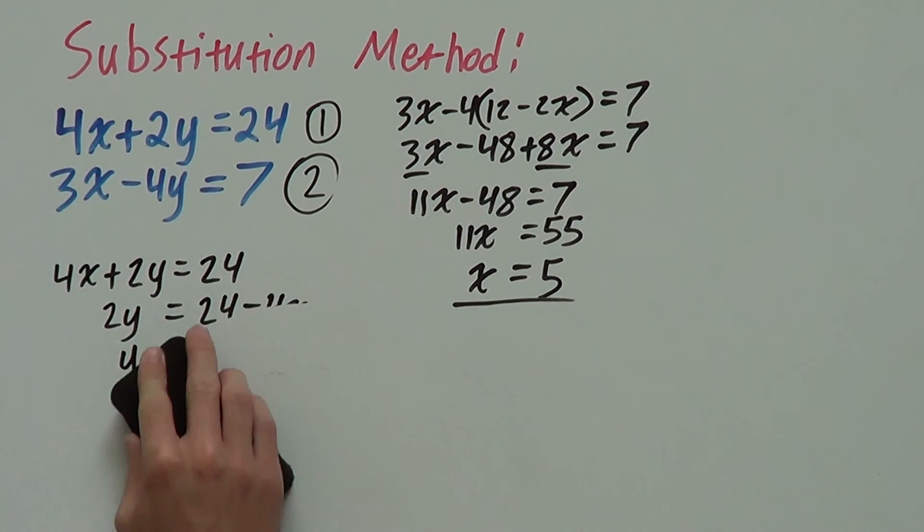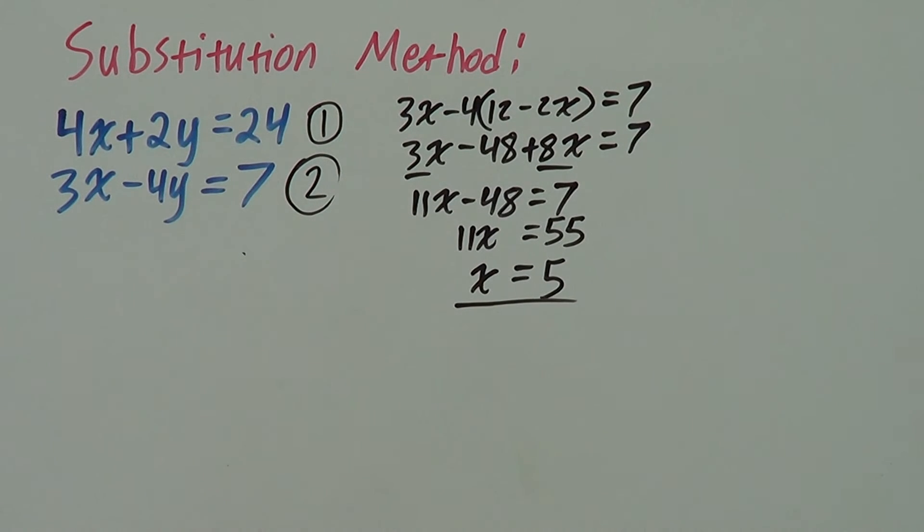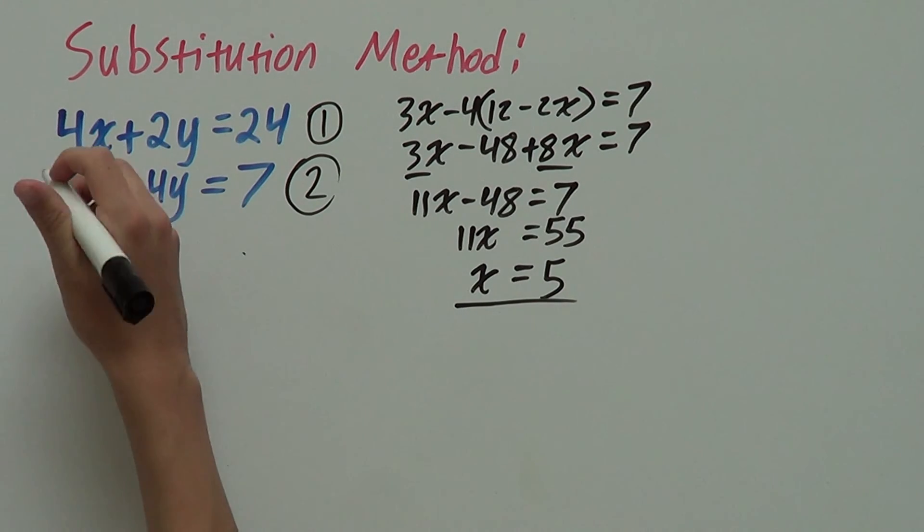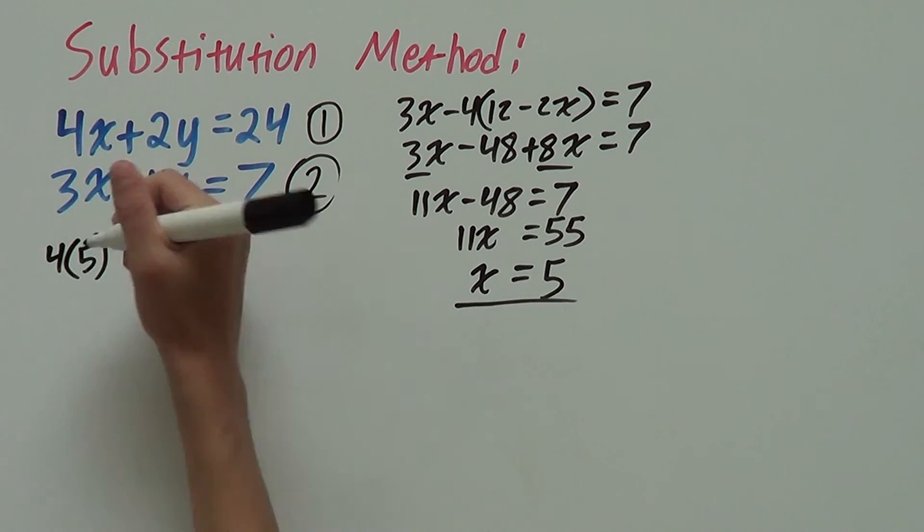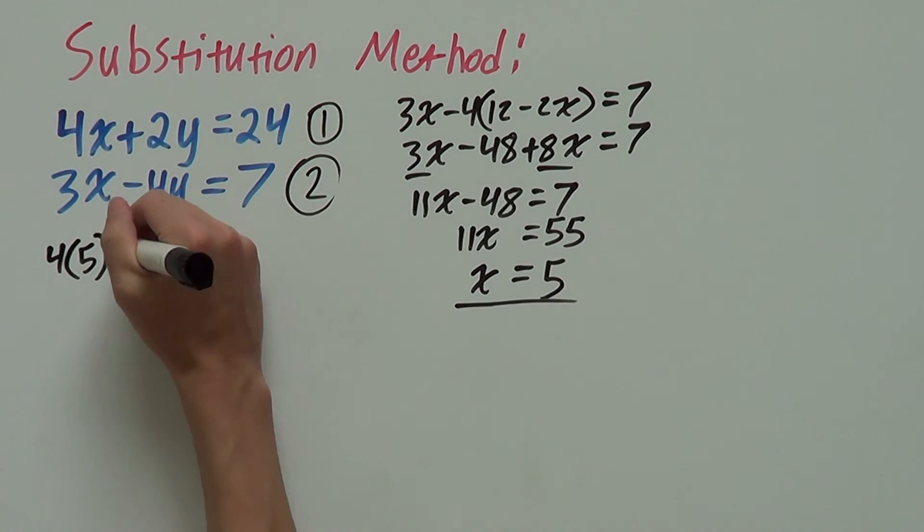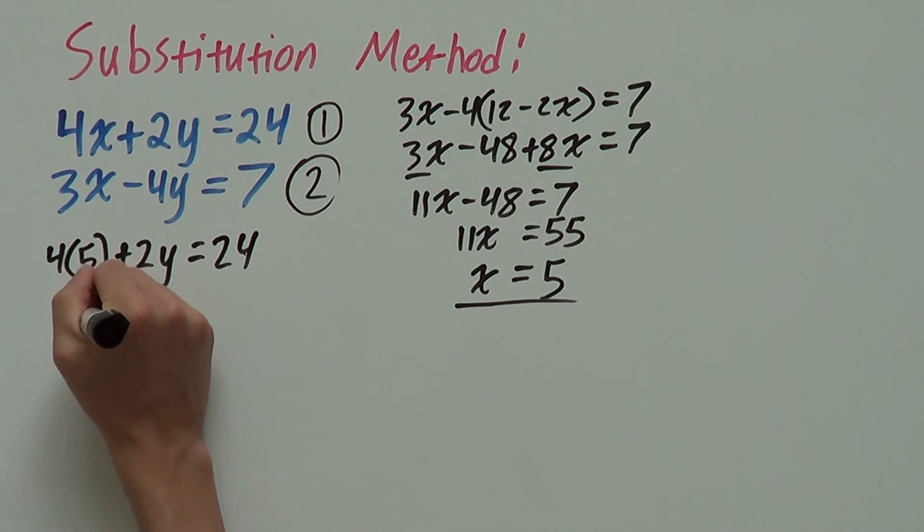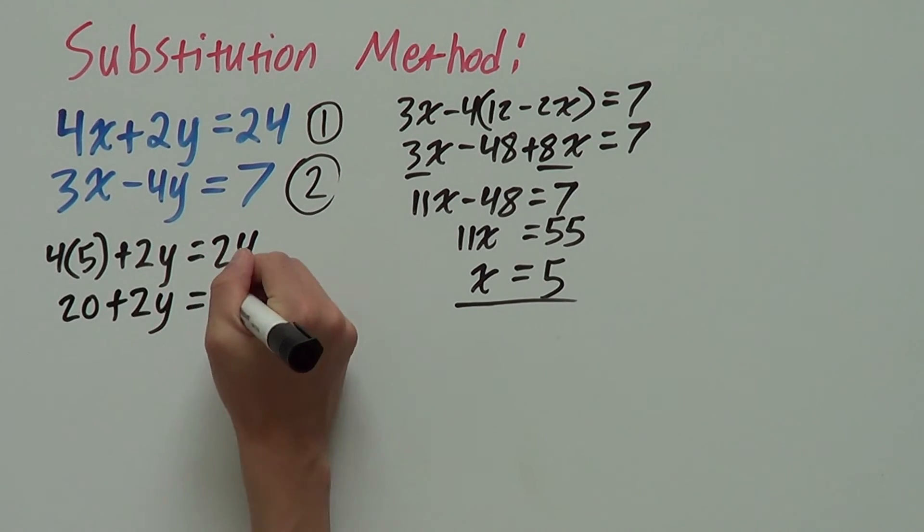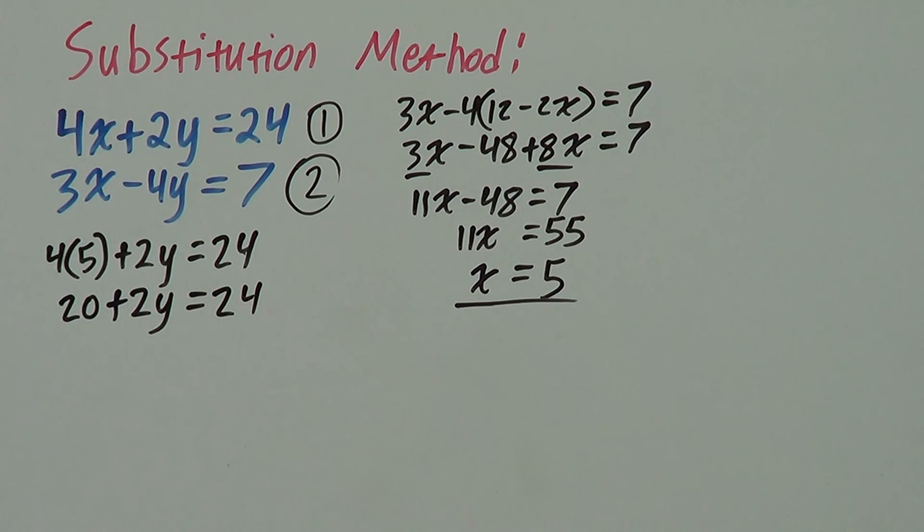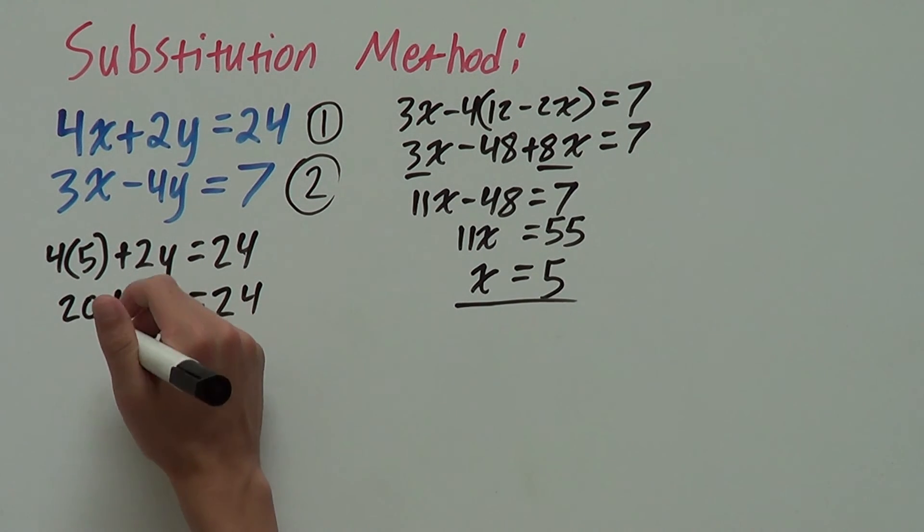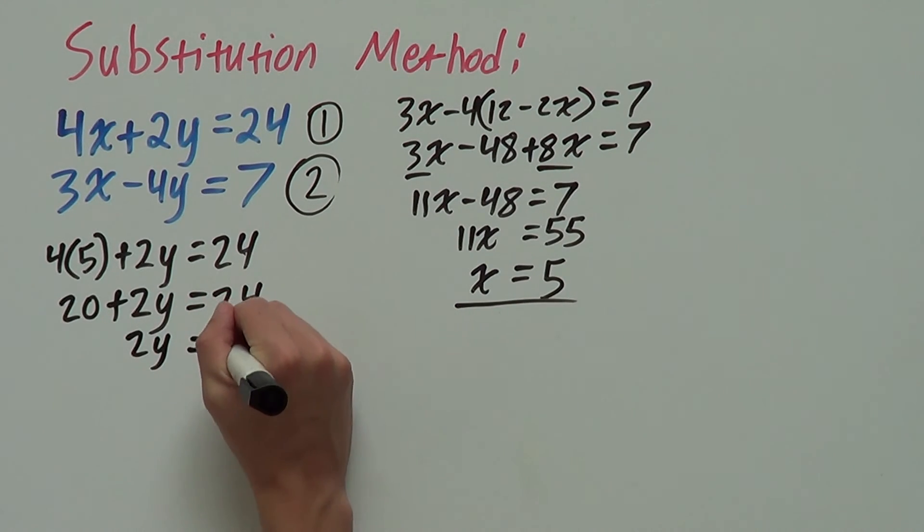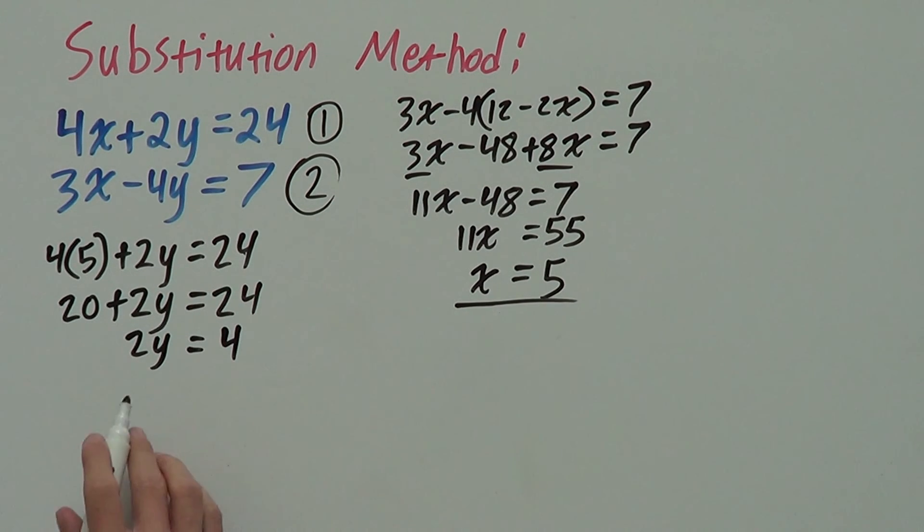So, I'll just clear up some space. So, now to get our y value we substitute x back into one of these equations. So, let's just do the top one. So, we have 4. We put our 5 in for x plus 2y equals 24. That gives us 20 plus 2y equals 24. Subtract 20 from both sides leaving us with just 2y equals 4.